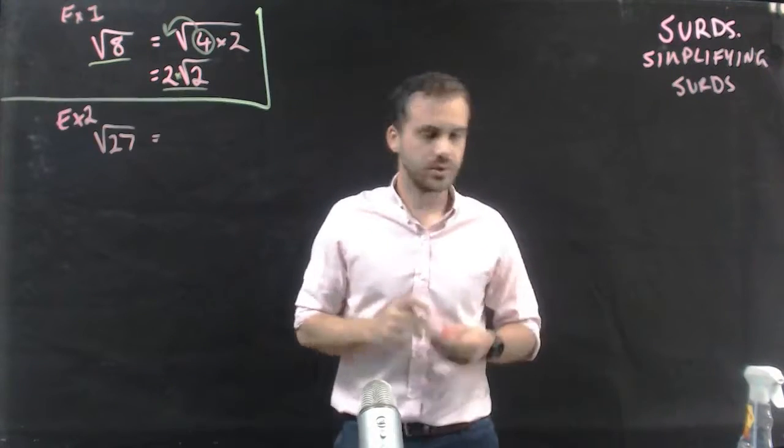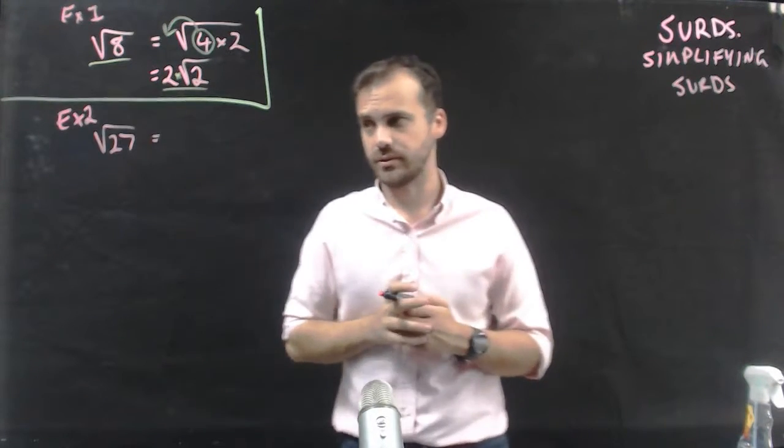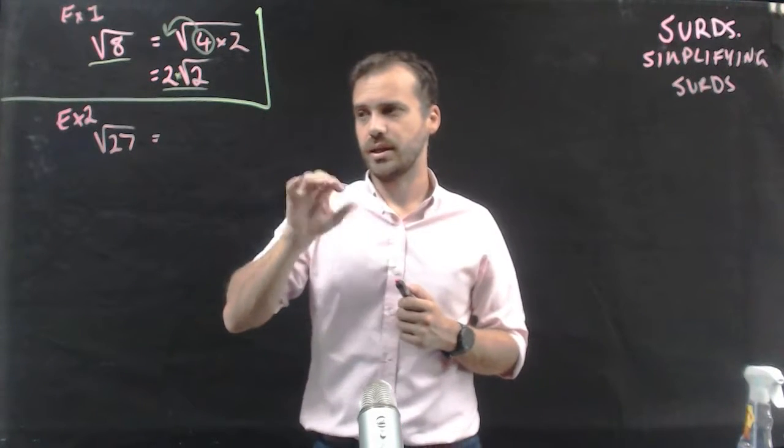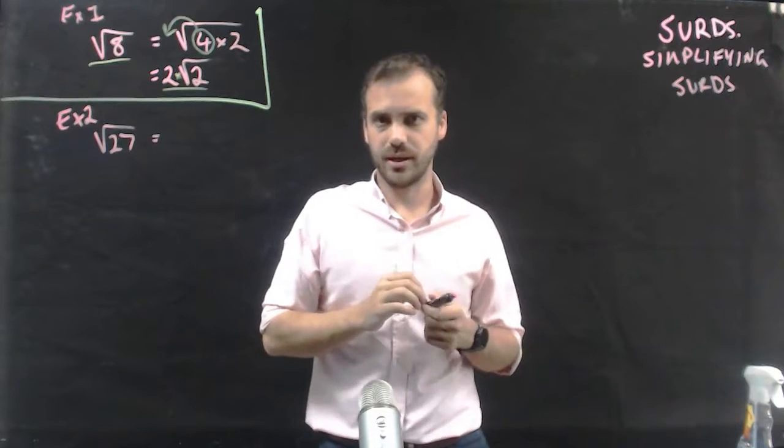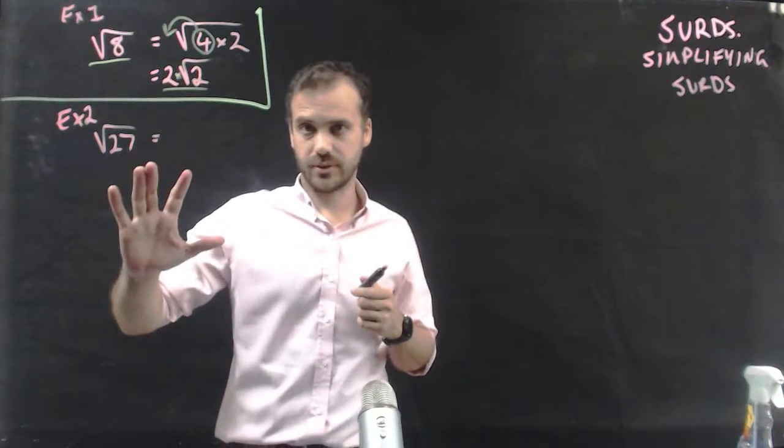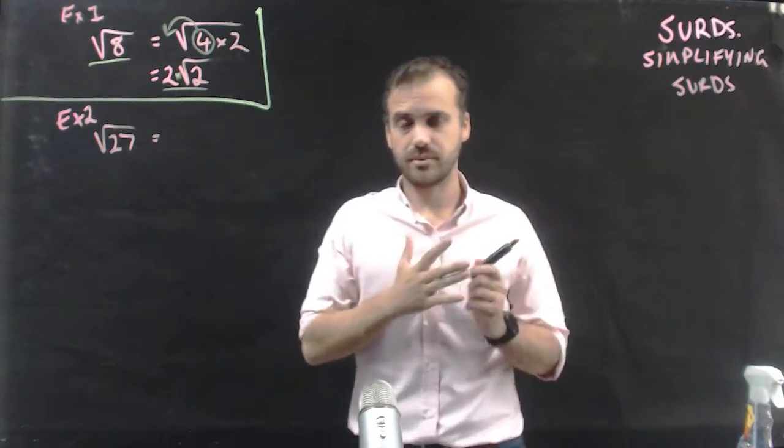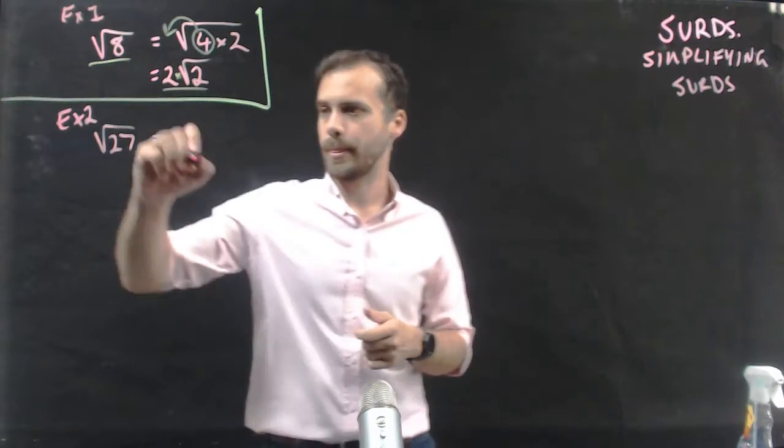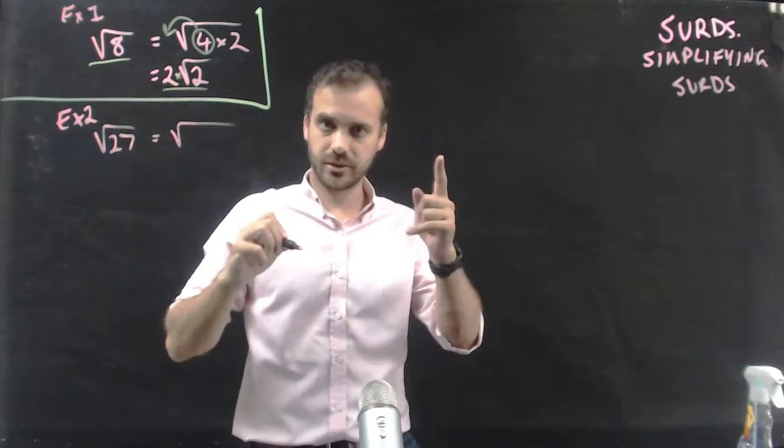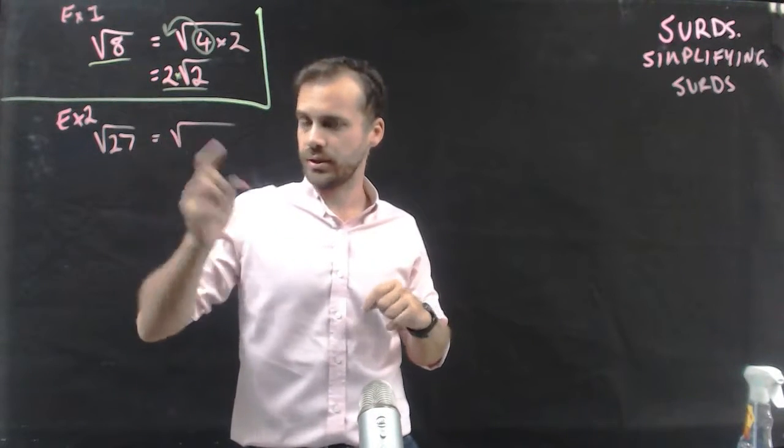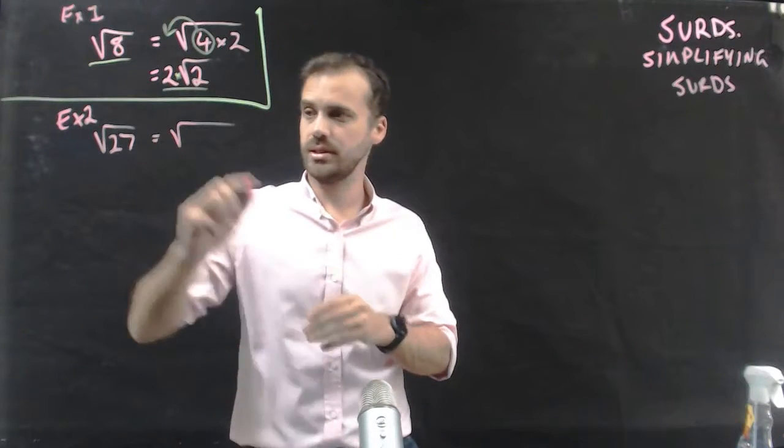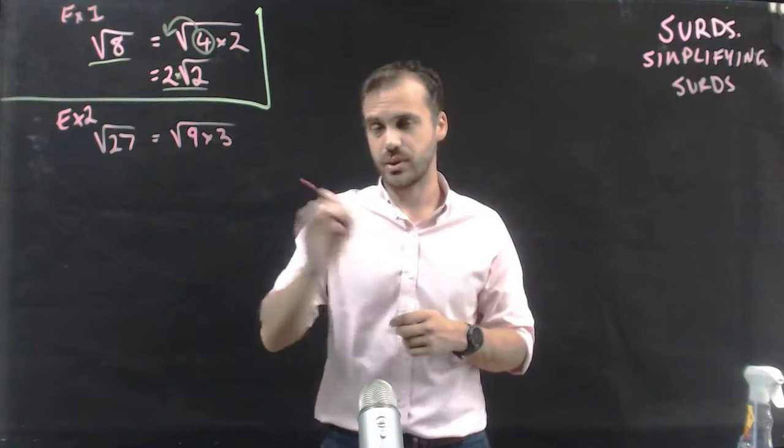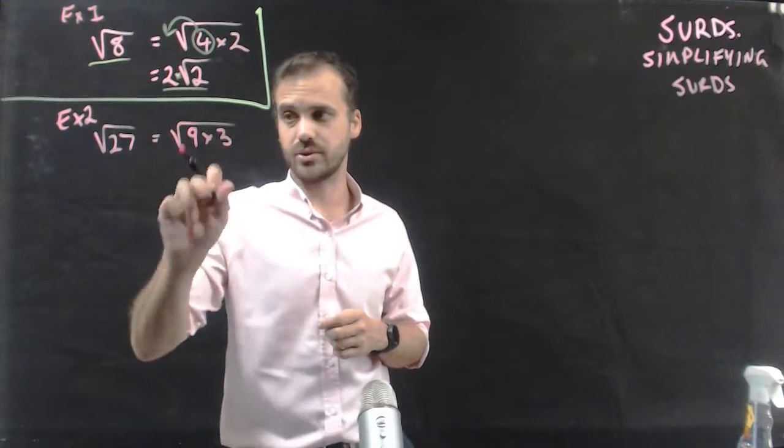Let's take a look at another example. The square root of 27. Now, I think about my square numbers. 27 isn't a square number. Is there a square number that is a factor of 27? Something times something makes 27, and one of those somethings is a square number. Think about it. Do it in your own head. Okay. Something times something? 9 times 3. 9 times 3 makes 27, and 9 is a square number.